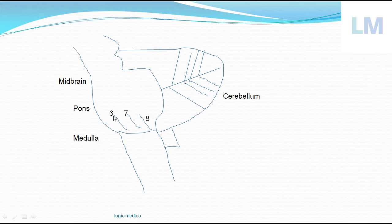The CP angle tumor compresses the sixth cranial nerve. Lower down on the medulla oblongata in the posterolateral sulcus, we have other cranial nerves like the ninth cranial nerve — the glossopharyngeal nerve — which carries taste from the posterior tongue and pharynx, and general sensation. This nerve is also involved in the swallowing reflex, so if the tumor enlarges inferiorly, swallowing will be affected and dysphagia — difficulty in deglutition — will result.